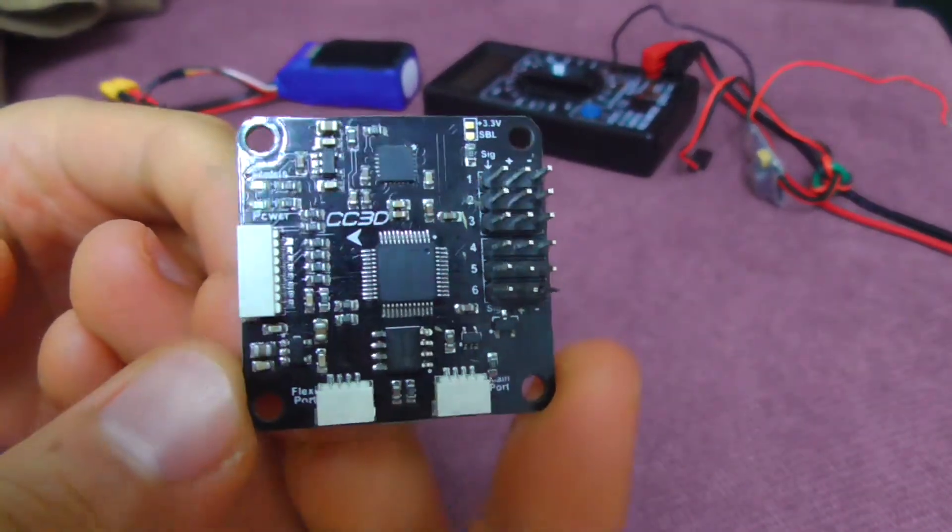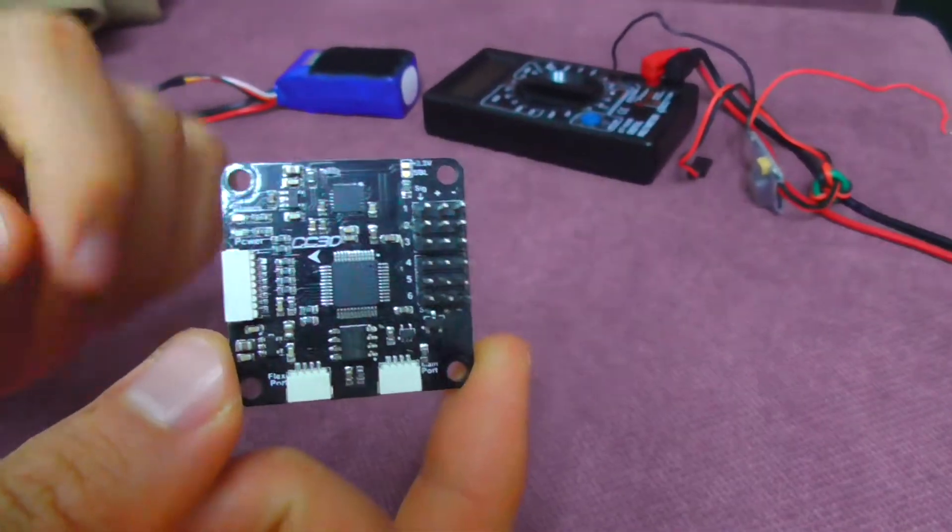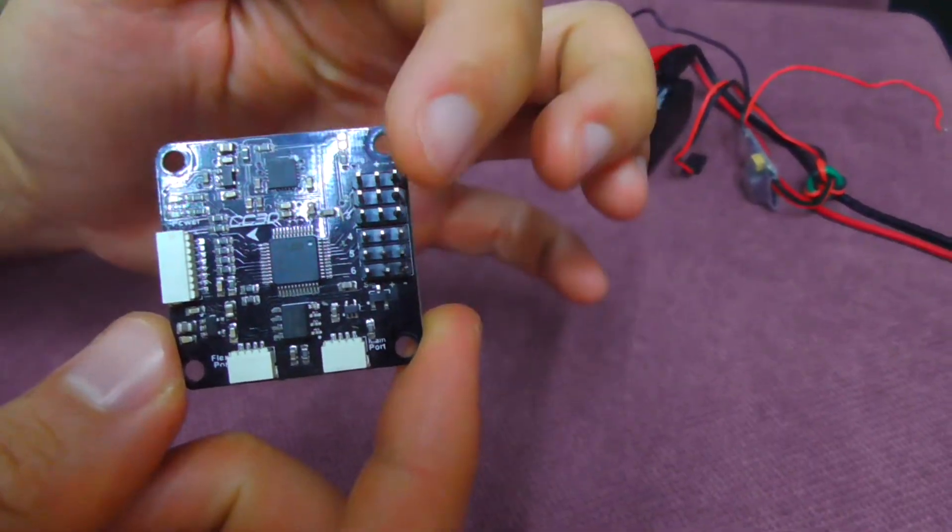How to power a CC3D board for quadcopters. Hold the board this way so that the pins are here on the right side.